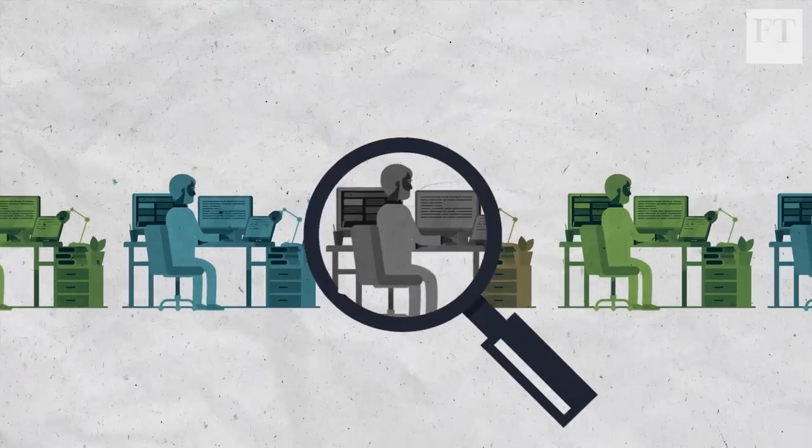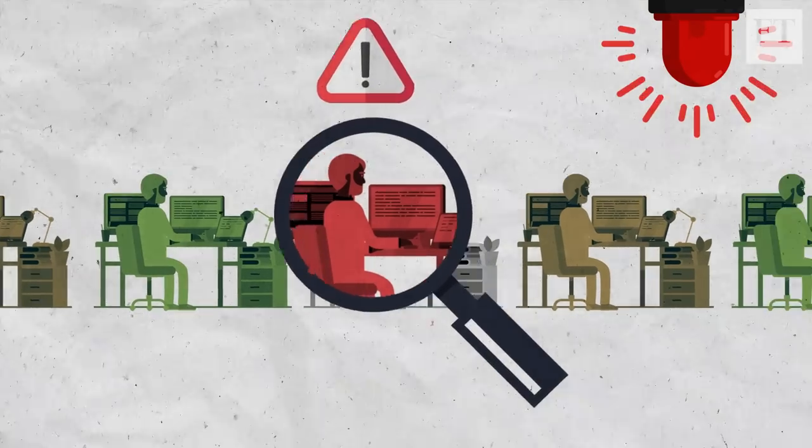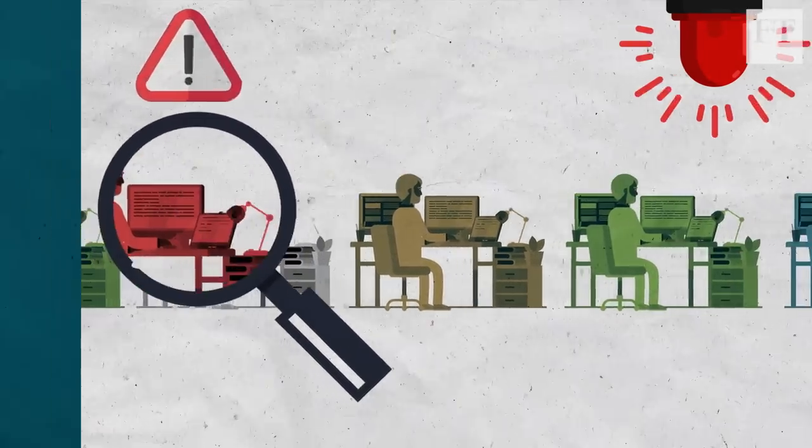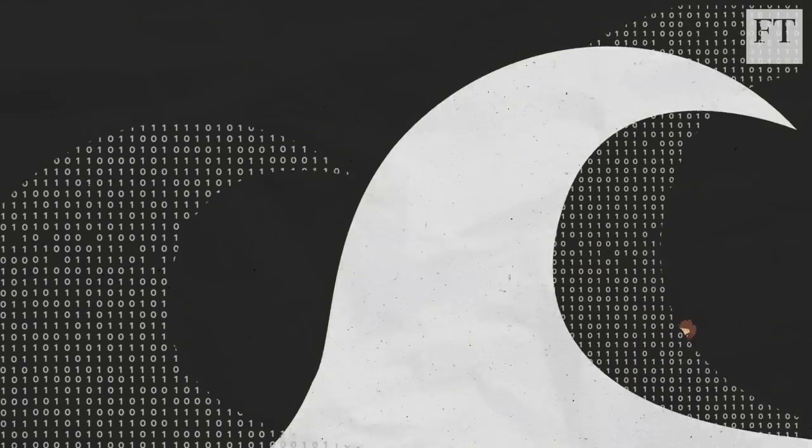The artificial intelligence aspect means programs constantly evolve so they get better at spotting real warning signs instead of flagging up thousands of irrelevant emails. That means that bank compliance teams don't get bogged down with vast amounts of data.